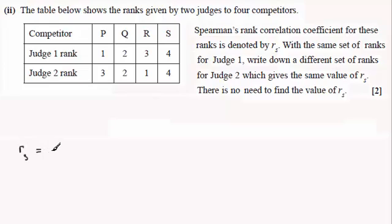Rs is given by 1 minus 6 times the sum of all the squares of the differences in the rankings divided by n times n squared minus 1.